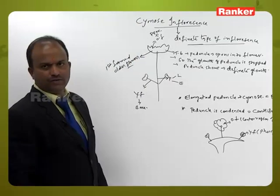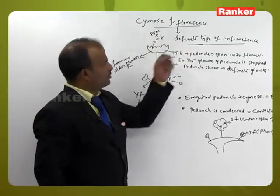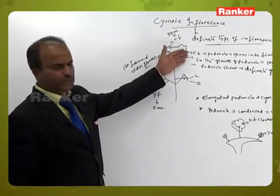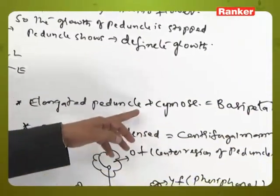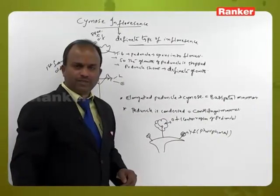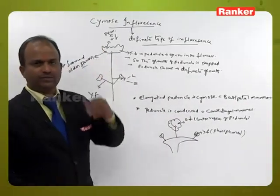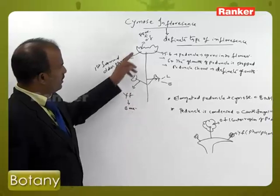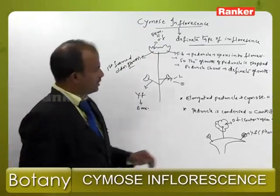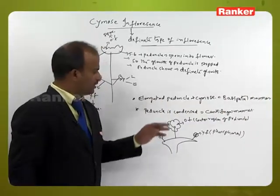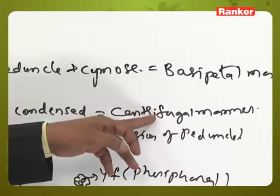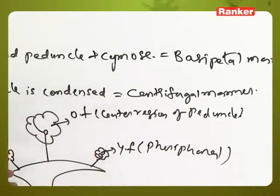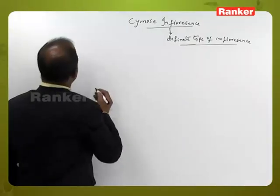This is about Cymose inflorescence, also called as definite type of inflorescence. With an elongated peduncle in cymose type, flowers are arranged in basipetal manner — younger flowers towards base and older flowers towards apex. With a condensed peduncle, flowers are arranged in centrifugal manner — older flowers towards center and younger flowers towards periphery.